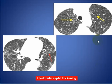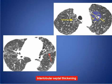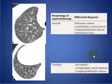This is another example showing thickening of the interlobular septum with irregularity and some nodularity on the fissure and the bronchovascular bundle. What are the differential diagnoses of this interlobular septal thickening?